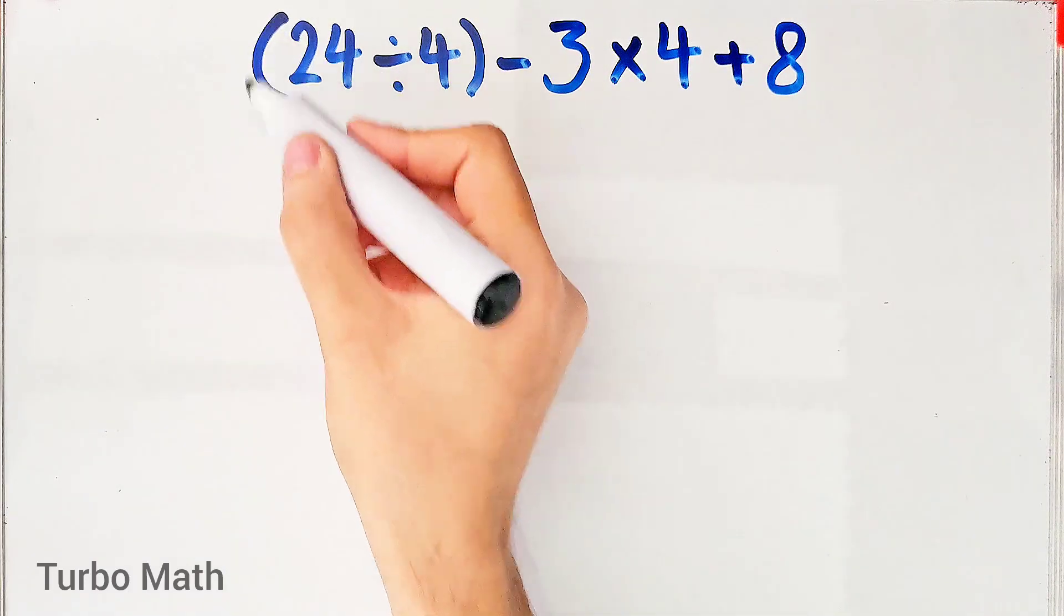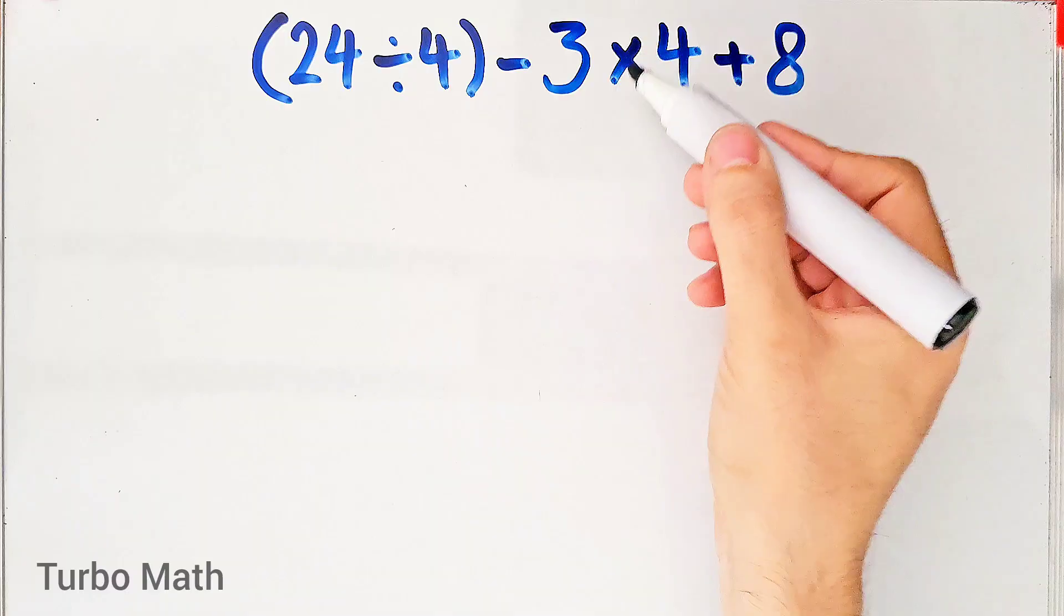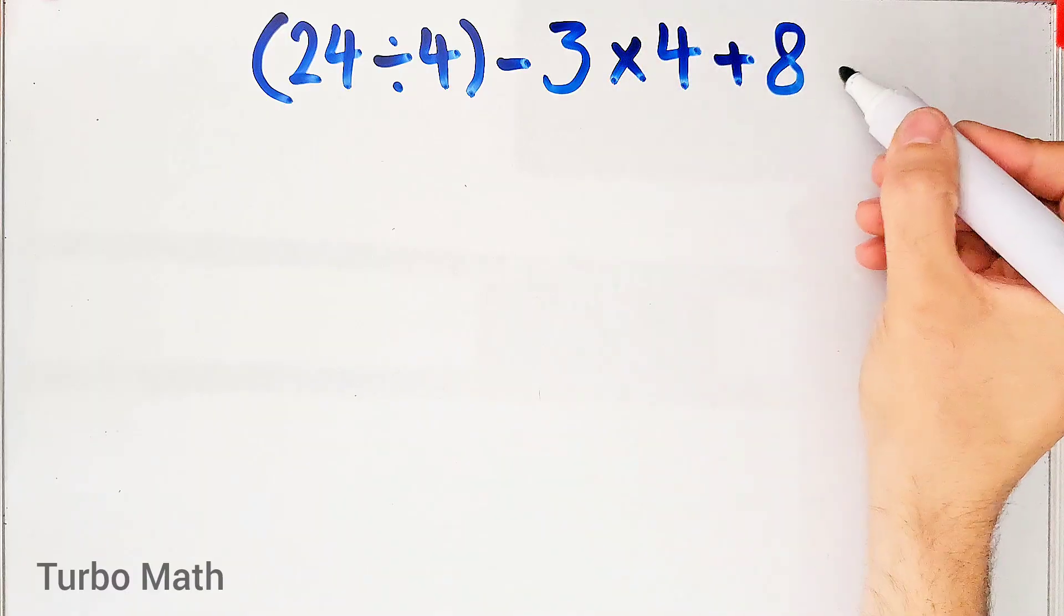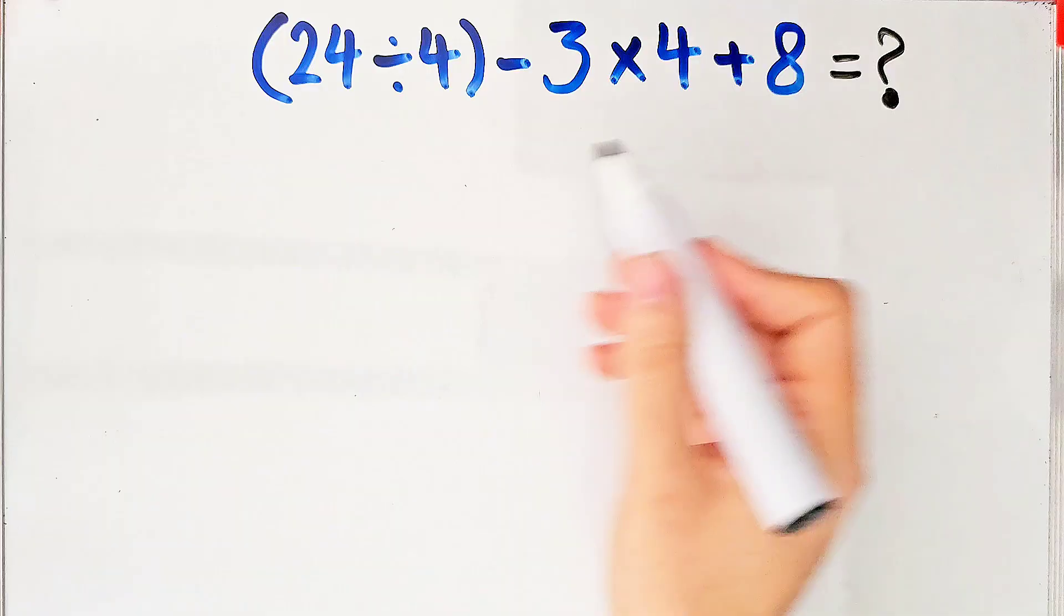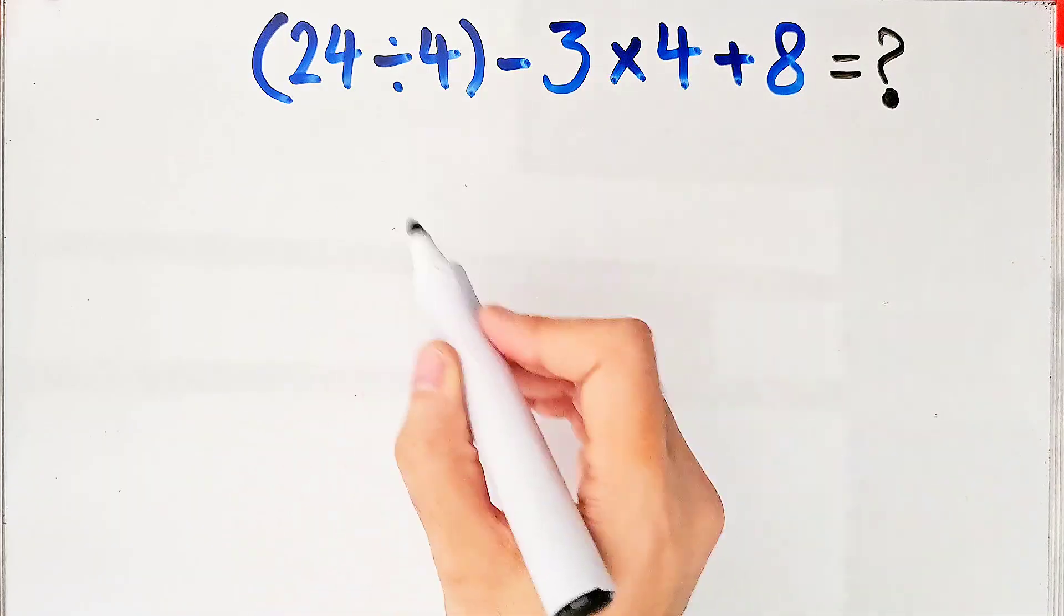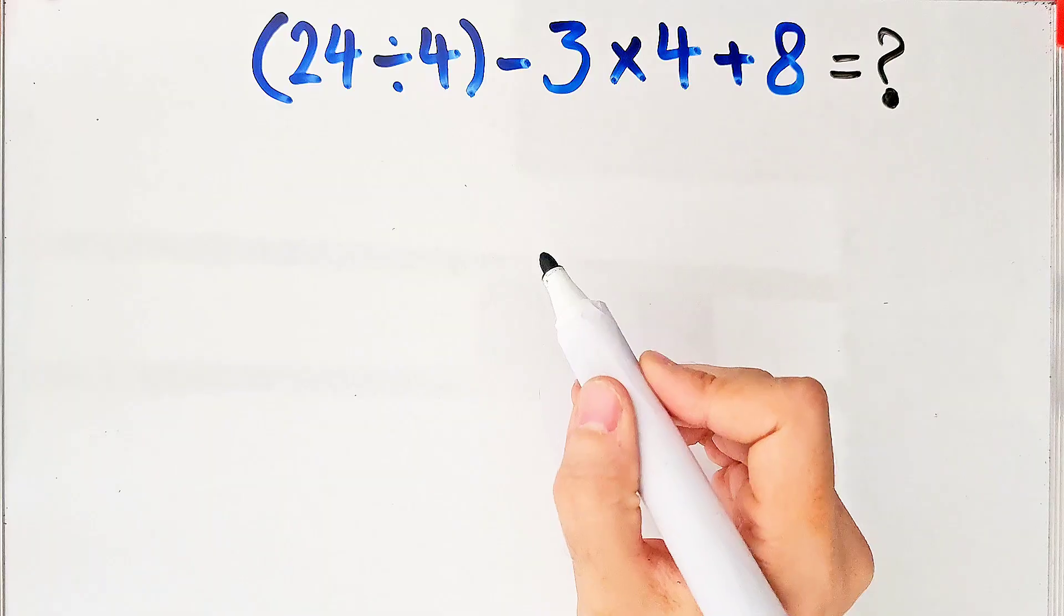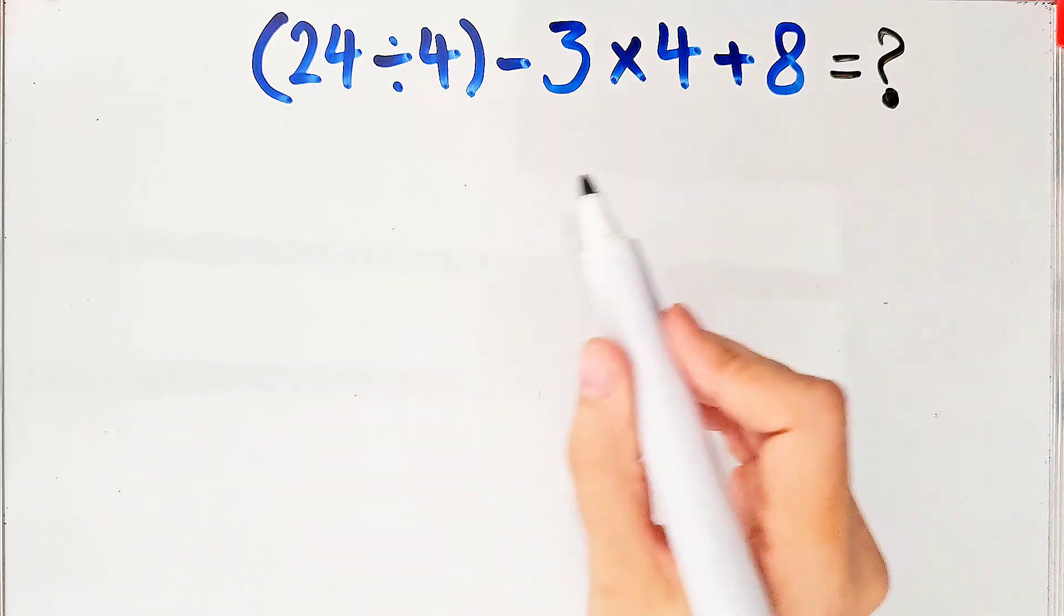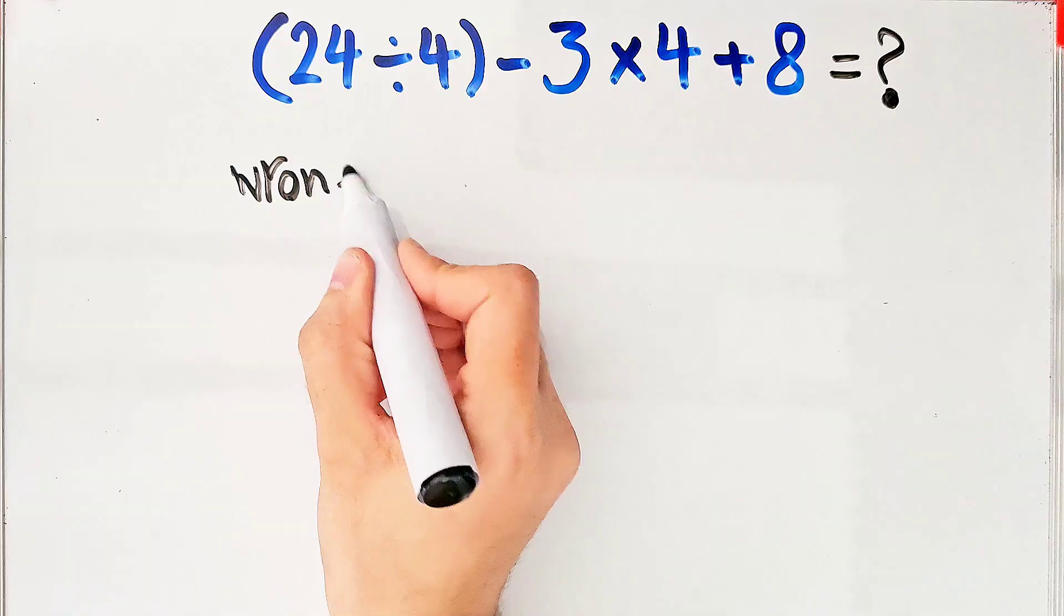Open parenthesis 24 divided by 4 closed parenthesis, then minus 3 times 4 plus 8. What is the answer of this question? Can you solve it? Hi friends and welcome to Turbo Math Channel. Many people get confused when they see this question. They are not sure which operation to do first, so they often make a mistake.